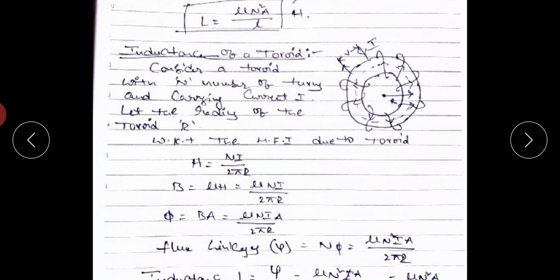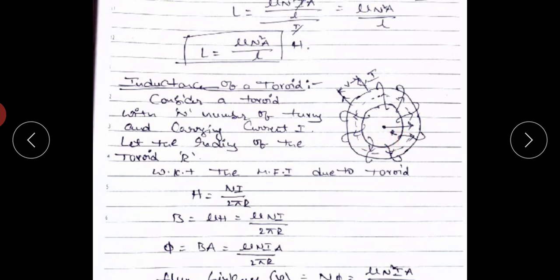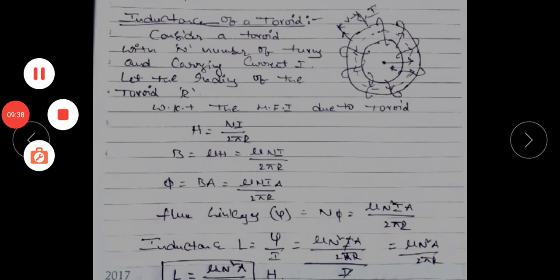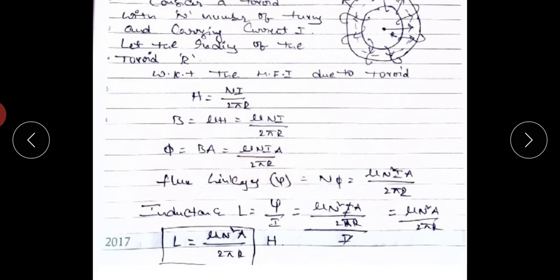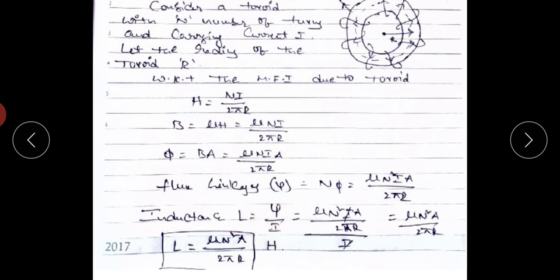Next is the inductance of a toroid. Consider a toroid with N number of turns, current I, and mean radius r meters. The magnetic field intensity due to the toroid: H equals N·I divided by 2πr. Flux density: B equals μ·H equals μ·N·I divided by 2πr. Magnetic flux: φ equals B·A equals μ·N·I·A divided by 2πr. Flux linkages: ψ equals N·φ equals μ·N²·A divided by 2πr. The self-inductance of a toroid: L equals μ·N²·A divided by 2πr.